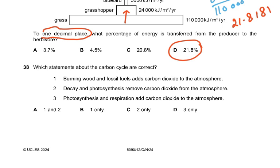Question 38. Which statements about the carbon cycle are correct? Burning wood and fossil fuels adds carbon dioxide to the atmosphere — yes, that is correct. Decay and photosynthesis remove carbon dioxide — no, only photosynthesis removes carbon dioxide; decay actually produces carbon dioxide. Photosynthesis and respiration both add carbon dioxide — no, photosynthesis removes it and respiration adds it. That is why the answer is B, statement 1 only: burning wood and fossil fuels adds carbon dioxide to the atmosphere.